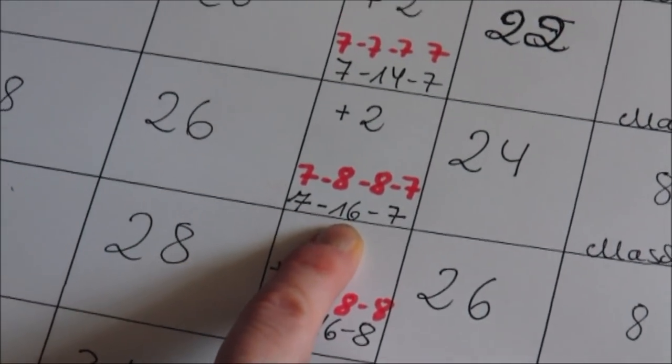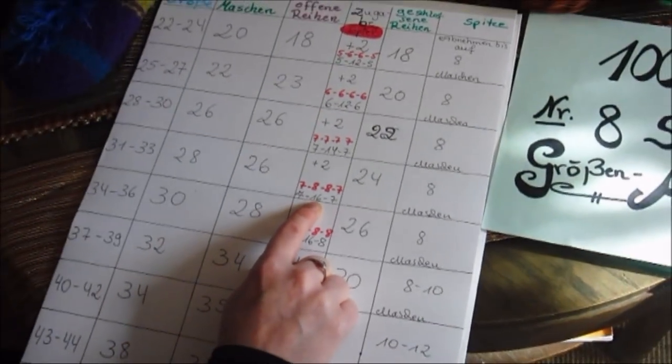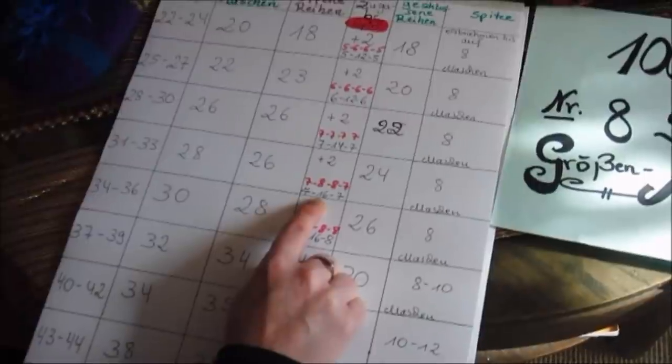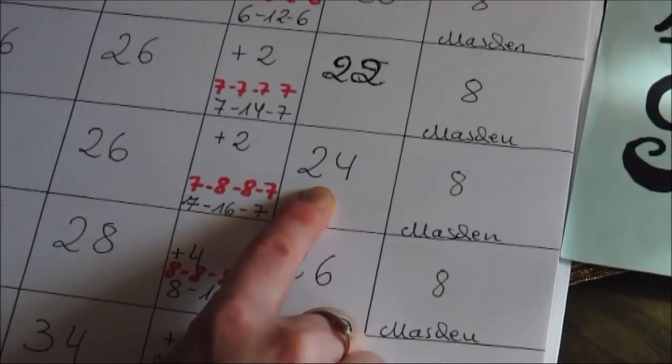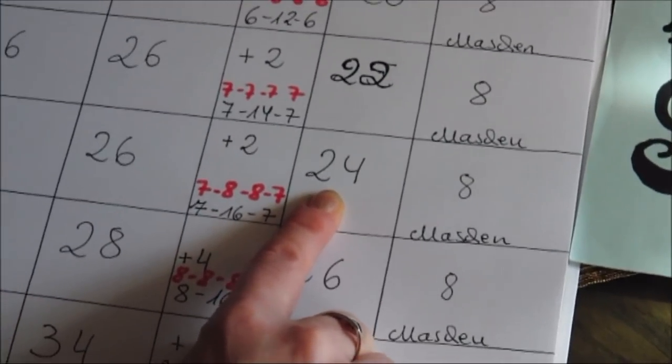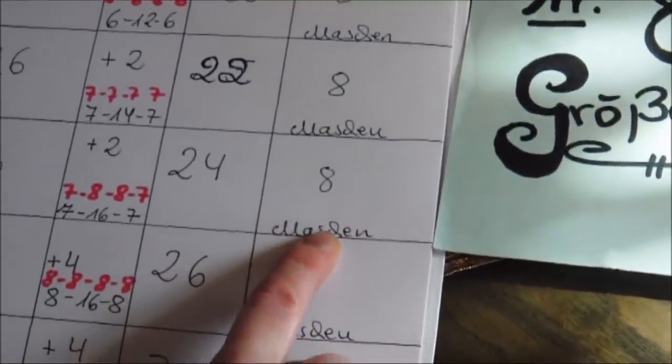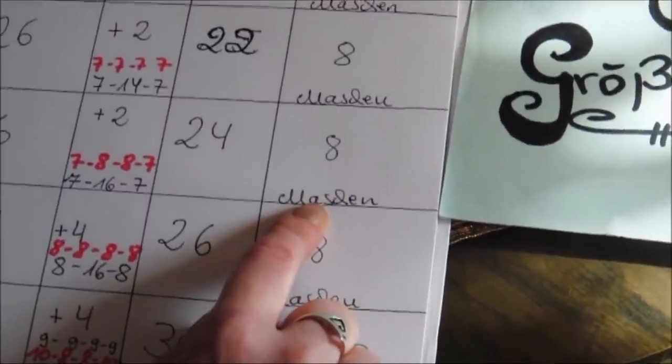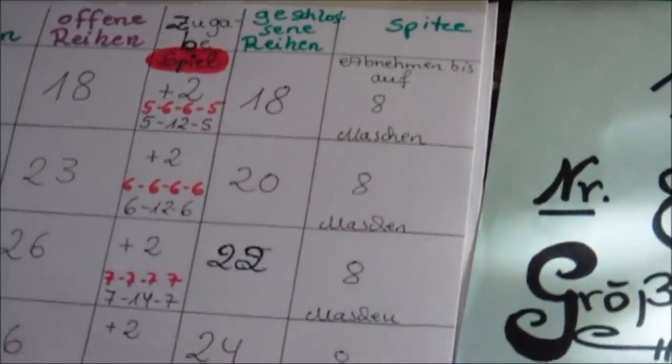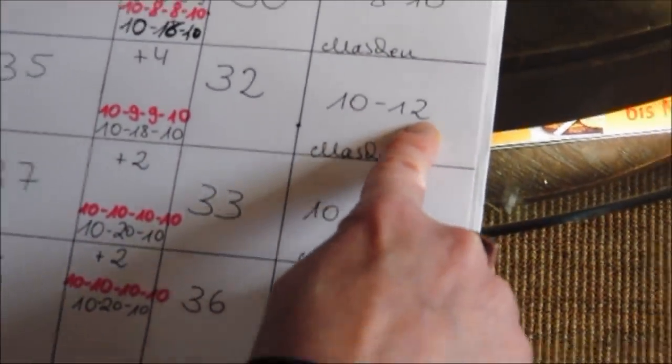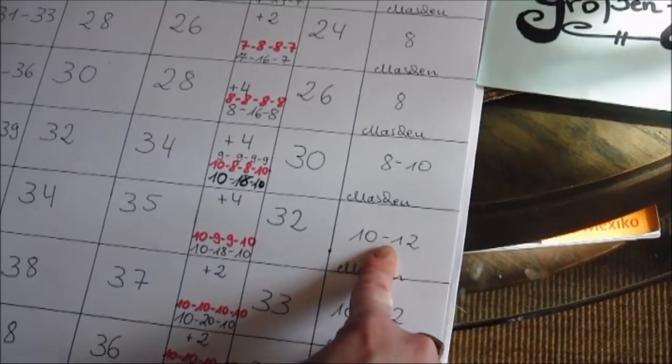Es geht einfacher und funktioniert prima. Dann stricken wir 24 geschlossene Reihen und nehmen dann die Spitze ab bis auf acht Maschen. Wichtig dabei ist: wenn ihr wirklich mal auf sieben oder neun Maschen kommt, es ist nicht so wichtig dass ihr genau die acht Maschen trefft. Ihr könnt auch etwas weniger oder mehr an Maschen für die Spitze zusammenziehen und vernähen.